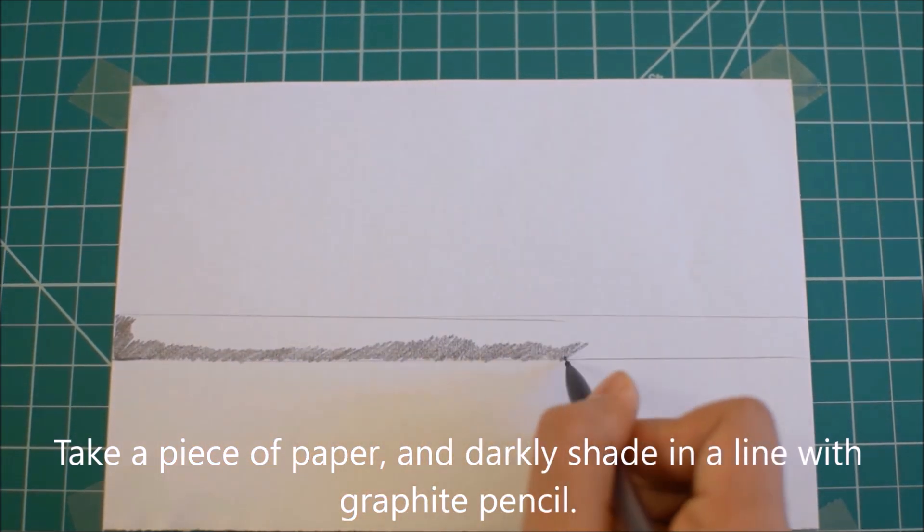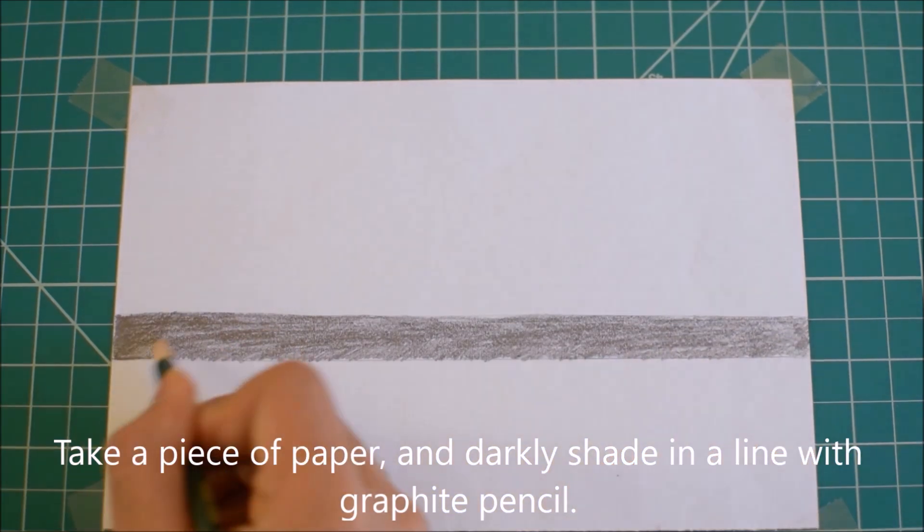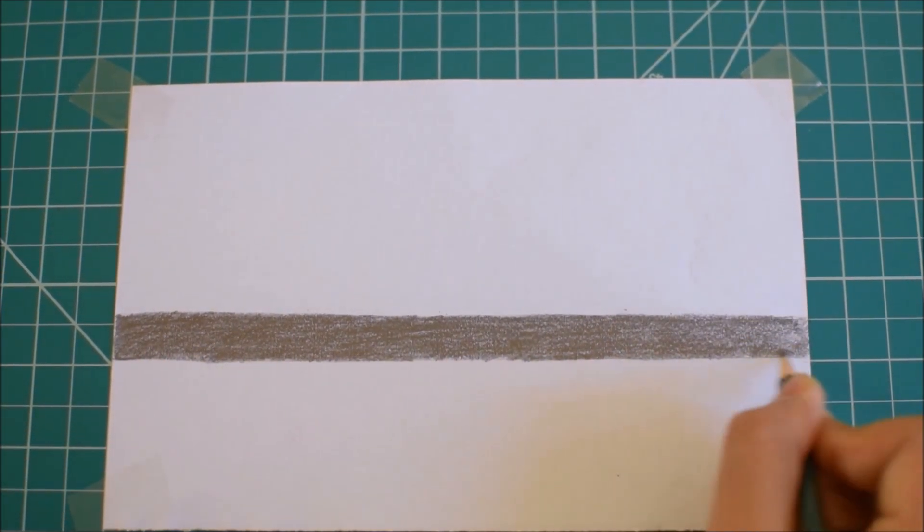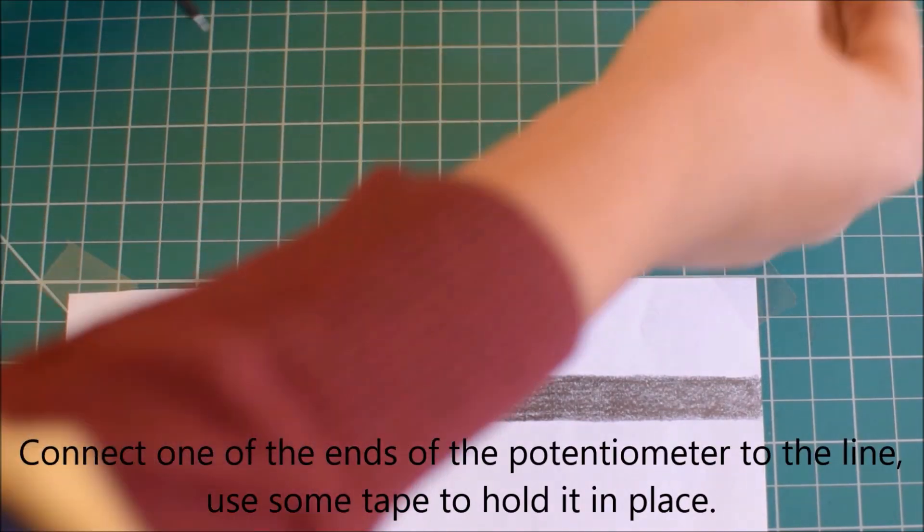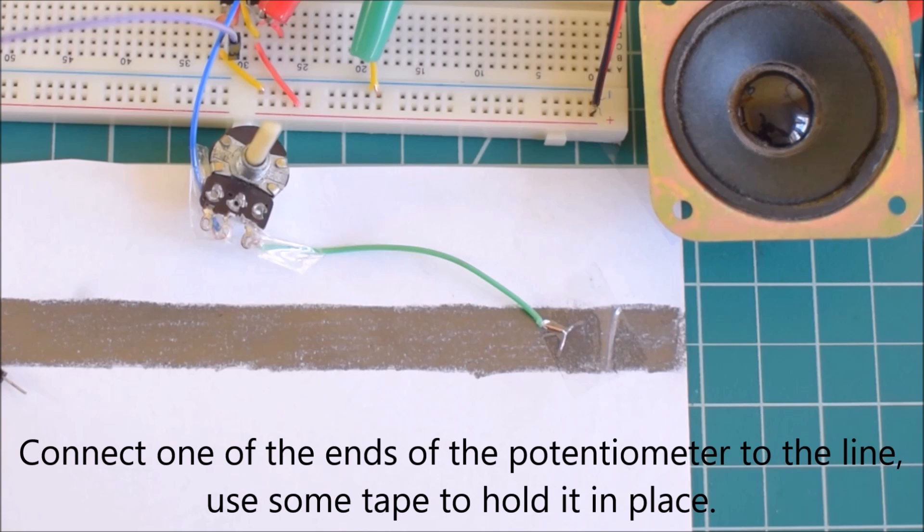Now take a piece of paper and darkly shade in a line with graphite pencil. Connect the other end of the potentiometer to the shaded area.